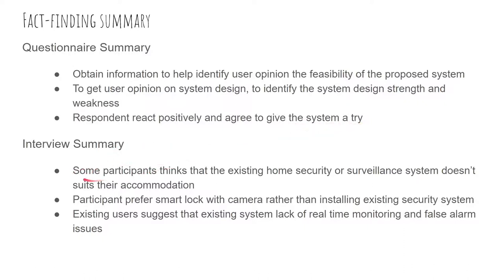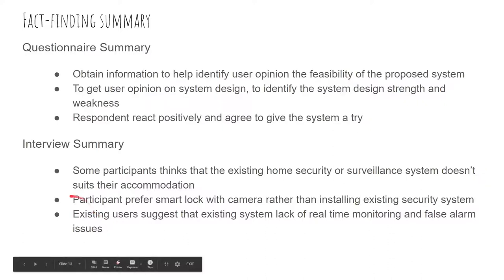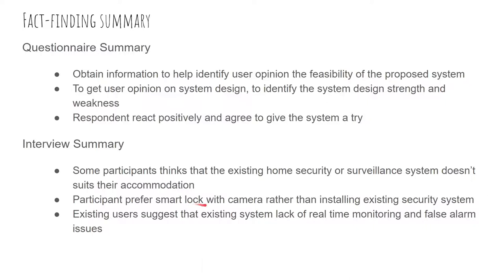For the interview summary, some participants felt that existing home security systems don't suit their situation. For example, if they are living in a small apartment, installing a security system would be costly. If they are renting a unit, installation is also a hassle, and it restricts them because it's hard to uninstall or move the system. Participants preferred a smart lock with a camera over installing an existing security system.